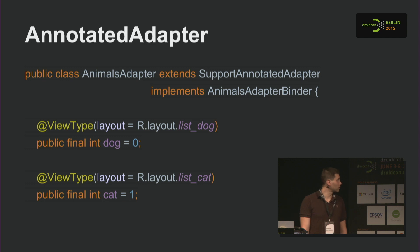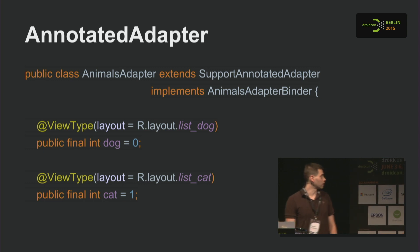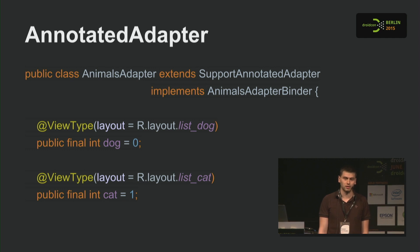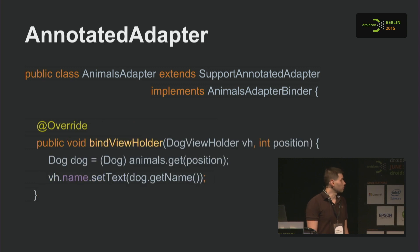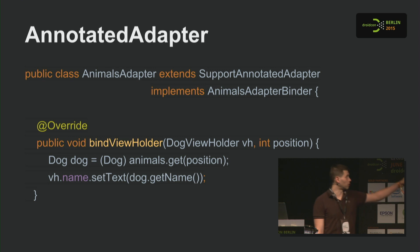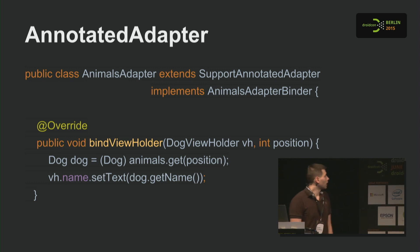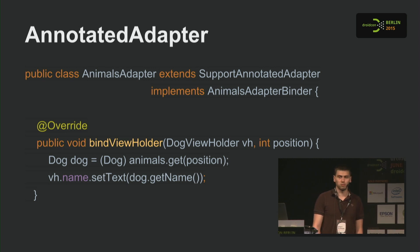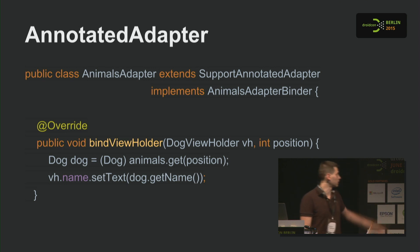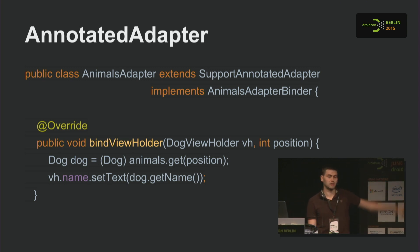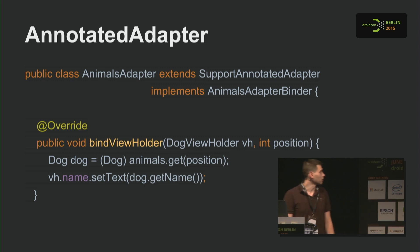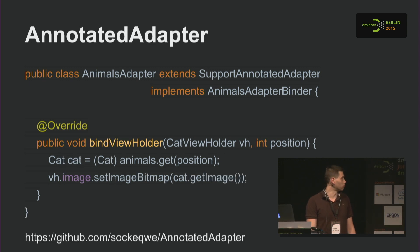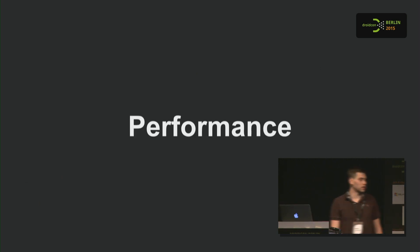There's also something useful called annotated adapters. You annotate your view types — like dog or cat — specify the layout file, and it generates the view holder classes for you. It also generates an interface you have to implement called AdapterBinder — in this case, AnimalsAdapterBinder. It reduces the code you have to write for distinguishing between view types; you don't have to implement onCreateViewHolder or onBindViewHolder. All you have to do is implement the interface, which defines methods where you get the generated view holder class.